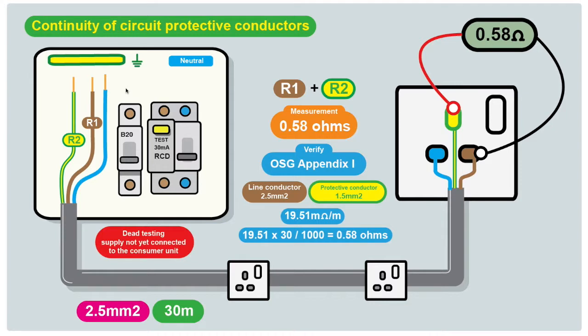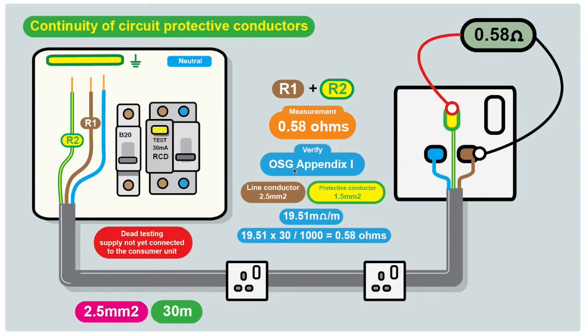Now we want to work out if this reading of 0.58 ohms is acceptable. What do we know about this circuit? We know it's wired in 2.5 millimeter squared twin earth cable. We know the cable length from the consumer unit to the furthest point is 30 meters. This is where we can use the on-site guide to help us verify that the measured reading is within an acceptable range.